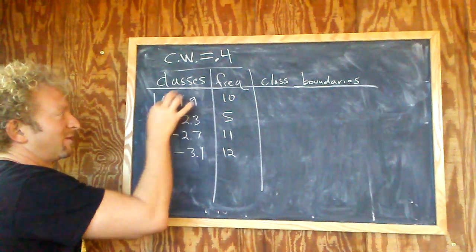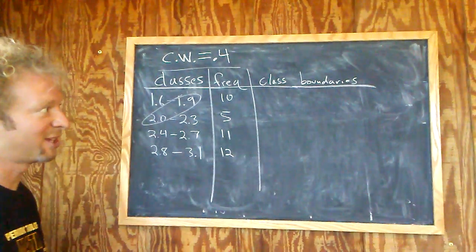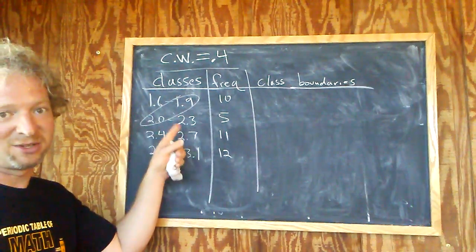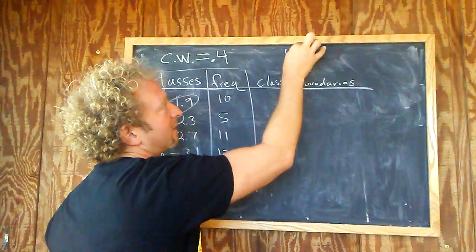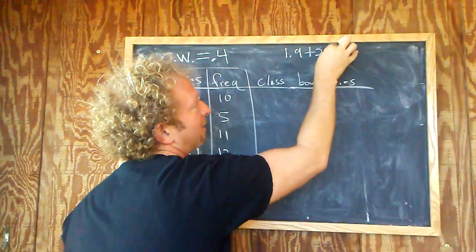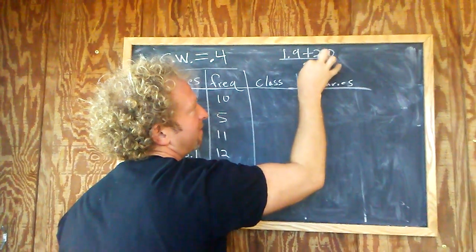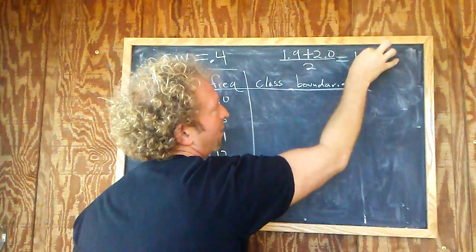So you take these two numbers, always, no matter what, every single time, and you add them up and you divide by 2. So step one, take these guys here, add them up, divide by 2. So we do 1.9 plus 2.0, and we divide by 2. So that's going to give us 1.95.